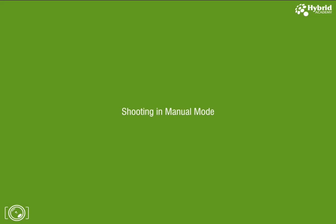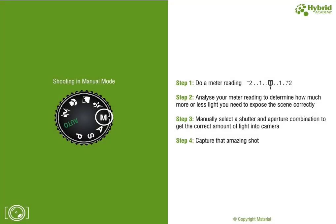Now let's move to the most important part of this complete course: shooting in manual mode. Shooting in manual mode involves four steps. First, do a meter reading — see if the light meter is at zero or has moved toward the positive or negative end. Second, based on the meter reading, determine how much light is too little or too much for correct exposure. Third, manually set the shutter speed and aperture combination to get the correct amount of light. Fourth, once settings are done, click the shot.